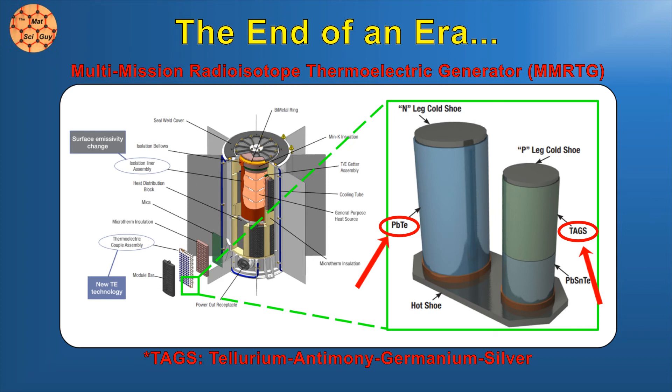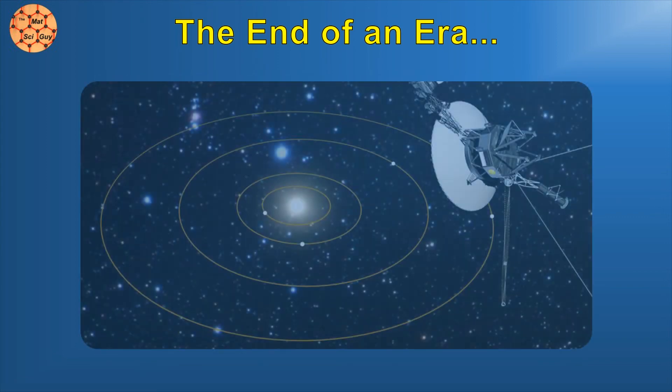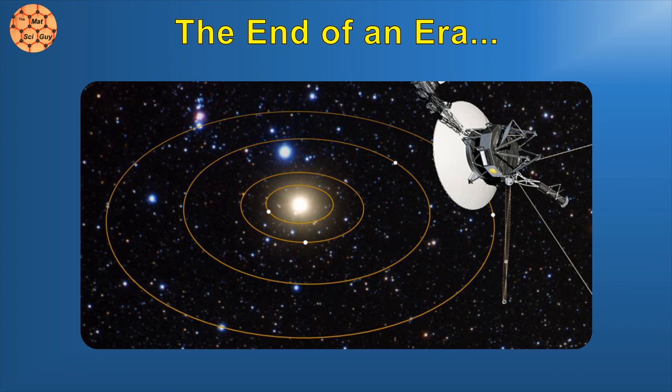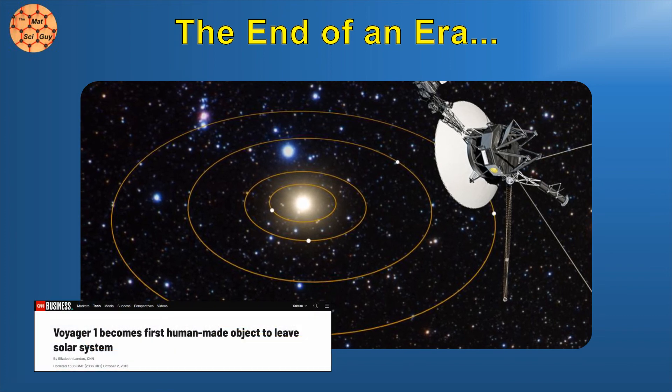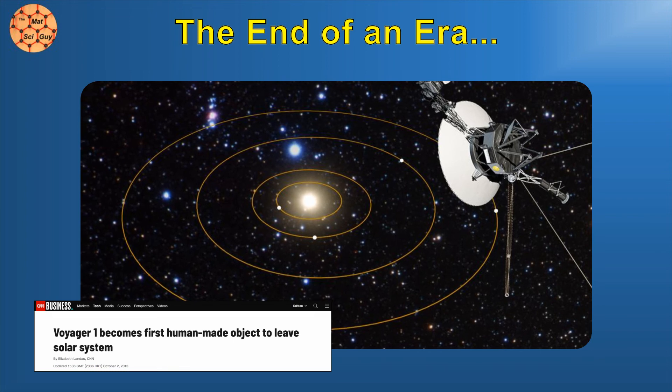Thermoelectric materials continue to improve and advance, and although there's still some active research into silicon germanium, there are many alternatives that offer better performance at this point. As Voyager 1 continues to drift out of our solar system, one could say that silicon germanium's time in the sun is over, both literally and figuratively.